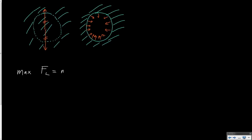That maximum lift would simply be the weight of the air times the gravitational acceleration — in other words, the density times the volume (that is the mass) times the gravitational acceleration. This results in the weight of the air and therefore the maximum lift force, and of course the density has to be the density of the air which was there before we took it out.